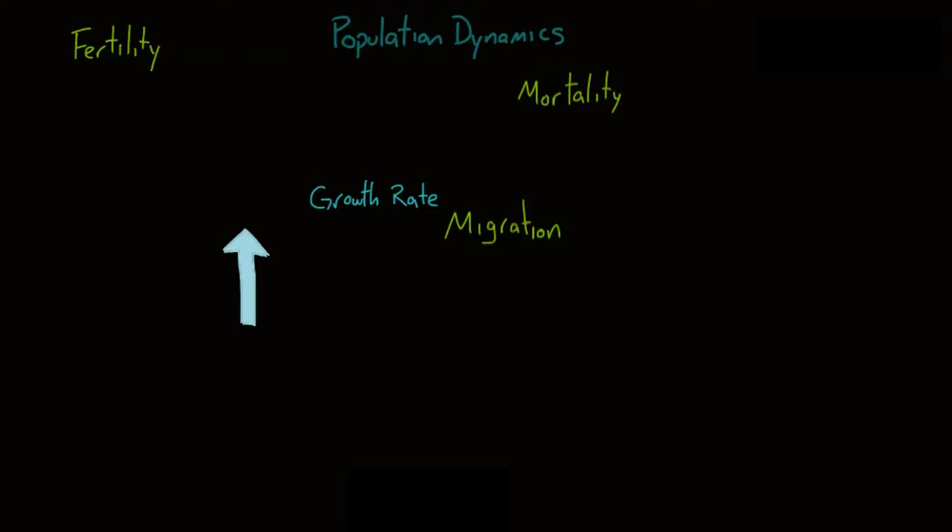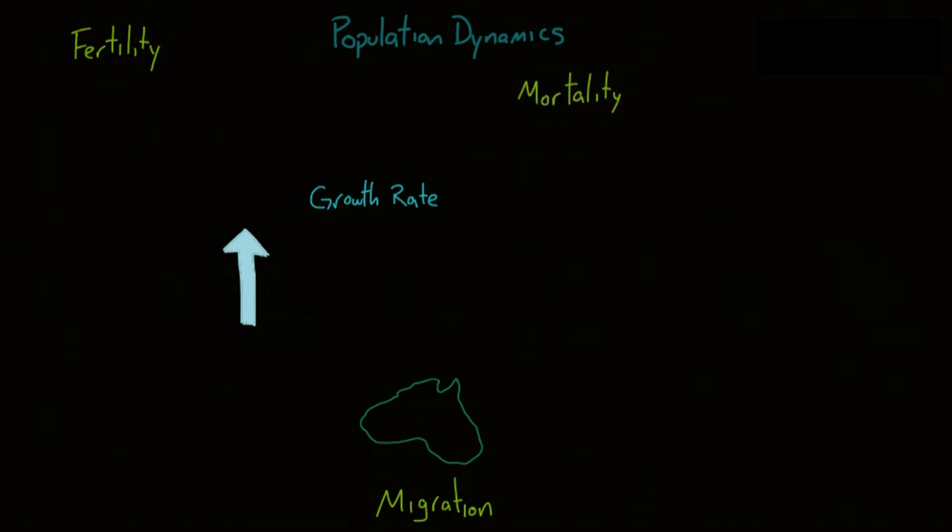Migration looks at the number of people who are moving into and out of countries. It doesn't change the total number of people living on the planet, but it does change the number of people living in a specific country or region. This doesn't mean that when you go on vacation to a different country that you are migrating there. Migration means that you are moving somewhere permanently to live and work and eventually die.